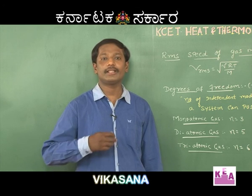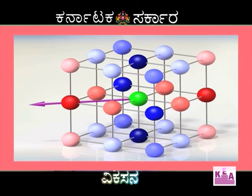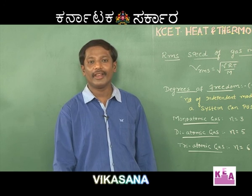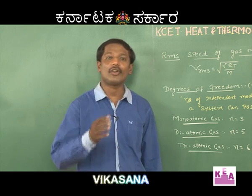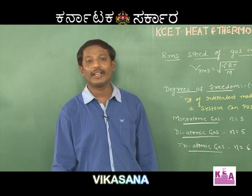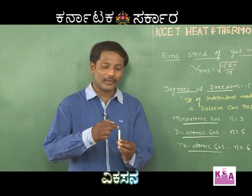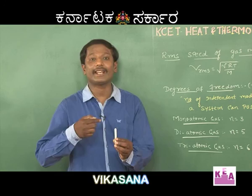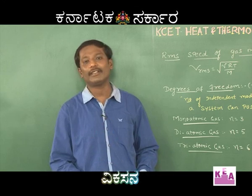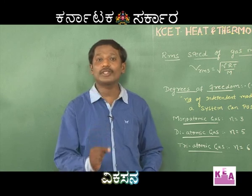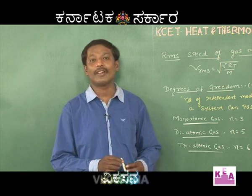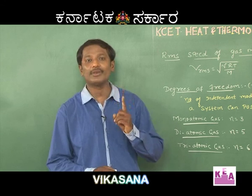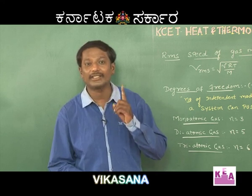As heat is supplied to the gas molecules, they vibrate and move in random directions. If we calculate the average velocity of all gas molecules it is going to be zero, because for every molecule moving in one direction there is another moving in the opposite direction. So in order to measure the velocity of gas molecules we consider the RMS value, not the average arithmetic value.